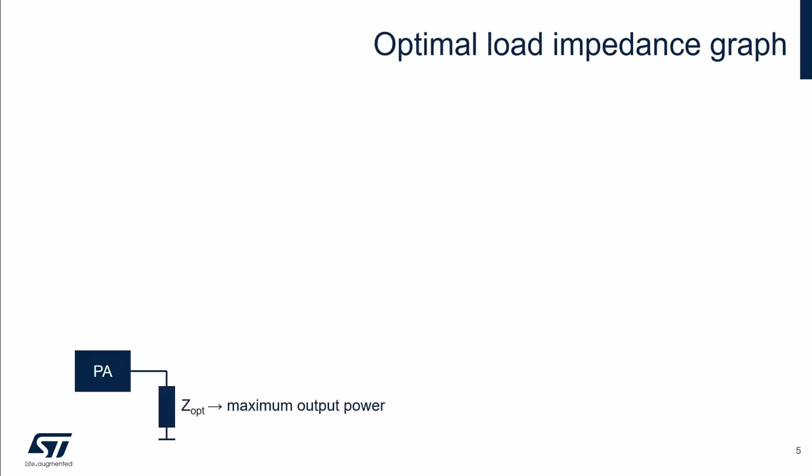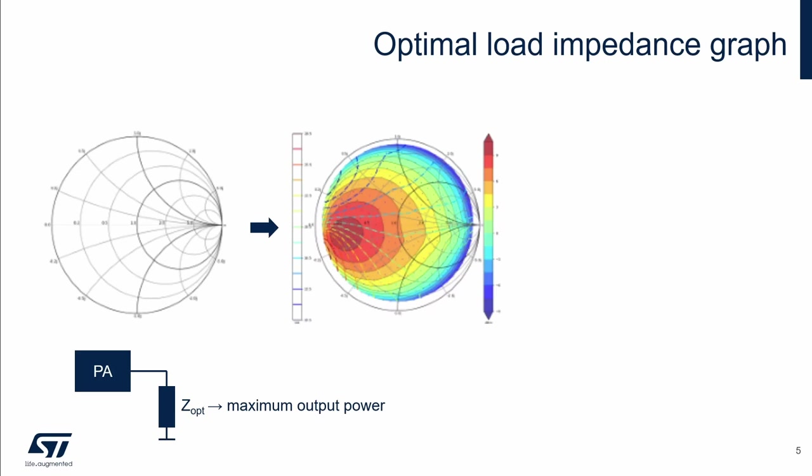The optimal load impedance is the impedance we need to load the power amplifier to get the maximum output power. It can be visualized in the Smith chart. This graph is the result of a load pull measurement where we observe the output power as a function of the load impedance.